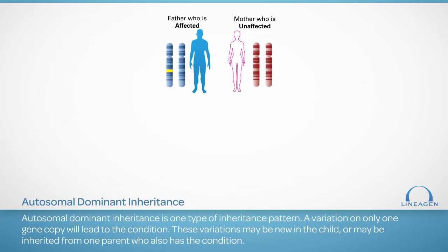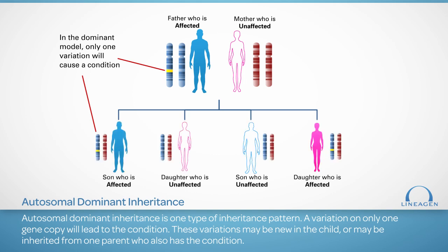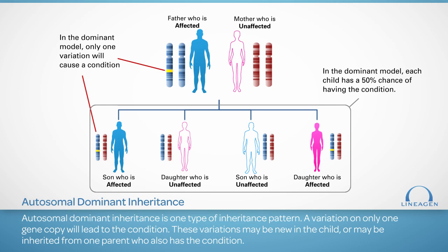Autosomal dominant inheritance is one type of inheritance pattern. A variation on only one of two gene copies will lead to the condition. The variation can be on either the chromosome from mom or from dad. Remember, autosomes are the first 22 chromosome pairs and are the same in both genders. Autosomal dominant variations may be new in the child or inherited from one parent who also has the condition. If a person has an autosomal dominant condition, there is a 1 in 2, or 50%, chance for each child to also have the condition.